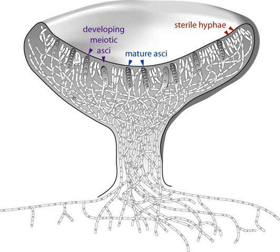An Ascocarp, or Ascoma, plural Ascomata, is the fruiting body (Sporocarp) of an Ascomycete phylum fungus. It consists of very tightly interwoven hyphae and may contain millions of ASCI, each of which typically contains four to eight Ascospores.